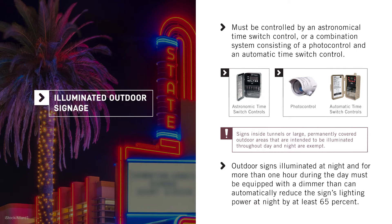In addition, outdoor signs that are illuminated at night and for more than one hour during the day must be equipped with a dimmer that can automatically reduce the sign's lighting power at night by at least 65%.